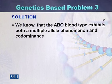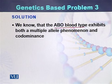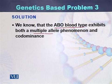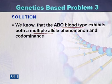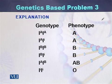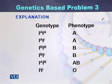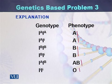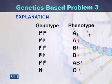We already know that the ABO blood system is due to a phenomenon of co-dominance. There are multiple alleles involved in determining the ABO blood system. We can see all the phenotypes and all the genotypes. There are four different blood groups: blood group A, blood group B, blood group AB, and blood group O — so four phenotypes.